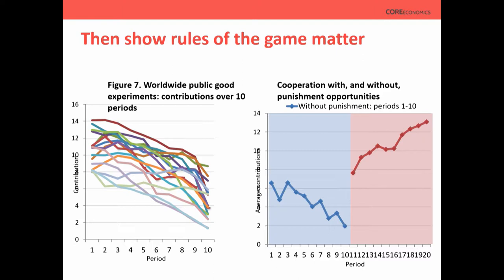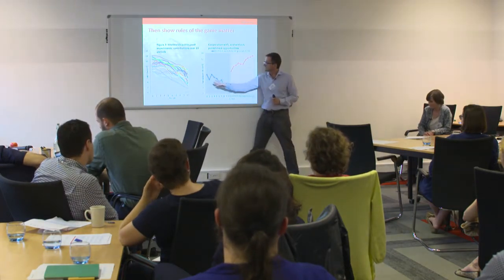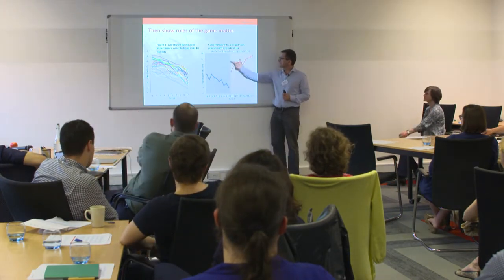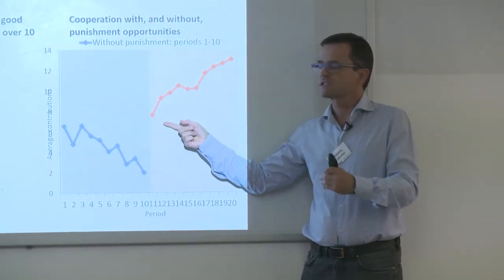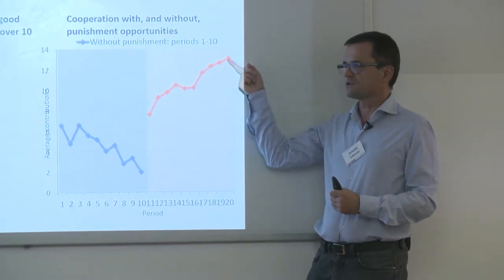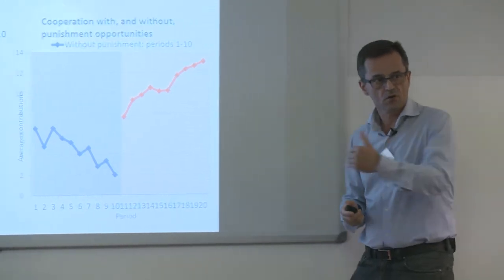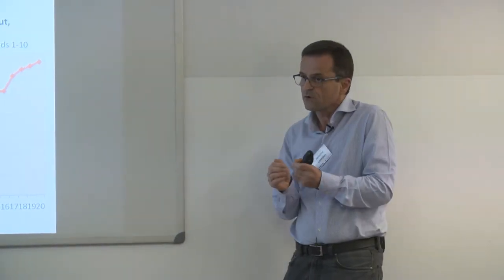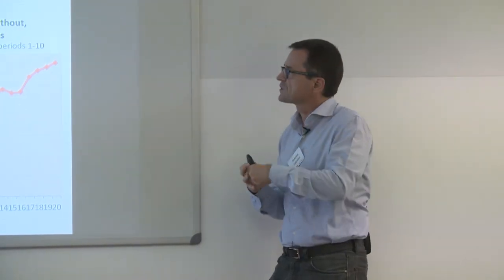Rules of the game matter a lot. We show another experiment: cooperation with and without punishment opportunities. The same kind of experiment, but we change the rules of the game by introducing the possibility of punishment in the second half. Reciprocal altruism can now do something, and it's the change in rules that allows it. This introduces the theme: interactions matter, rules of the game matter, evidence matters — and the whole cycle repeats within a single unit.